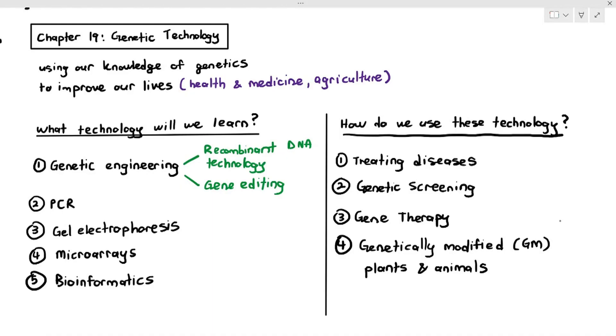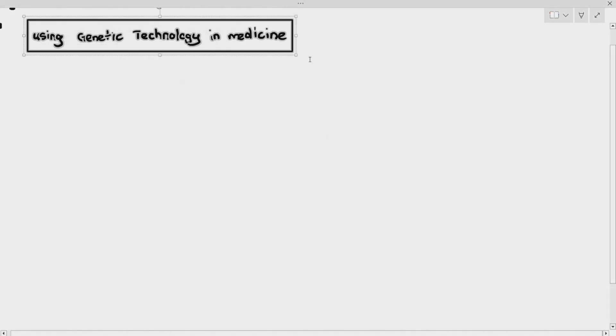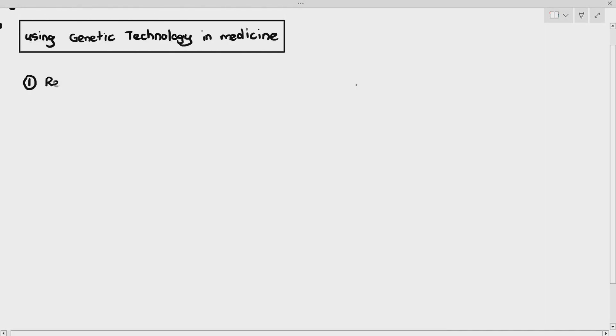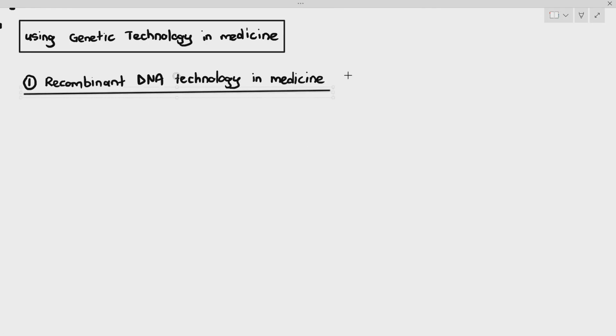So now that we have studied all those different types of technology, we have to understand how do we apply this particular technology into daily life. One application of gene tech is using genetic technology in medicine. And how do we use genetic technology in medicine? The first way we can do it is by using recombinant DNA technology in medicine.